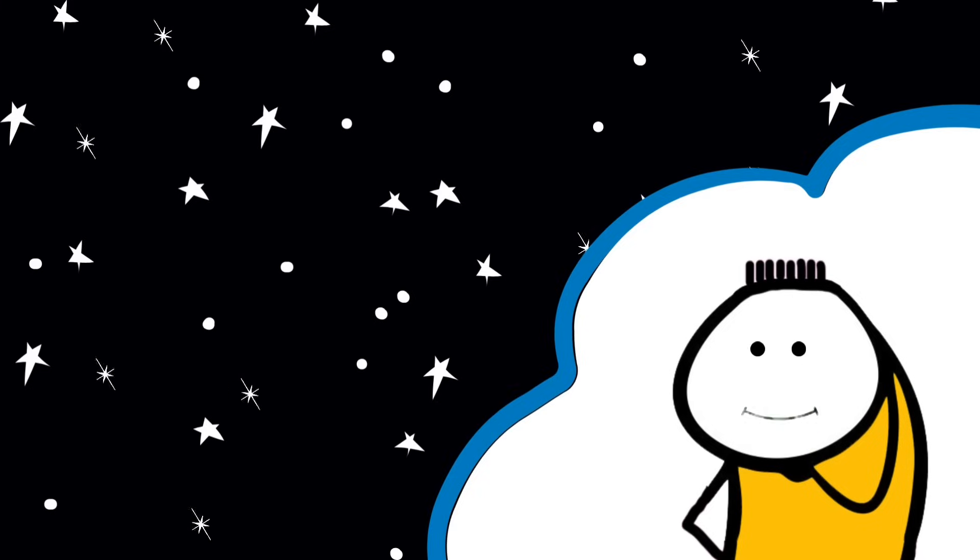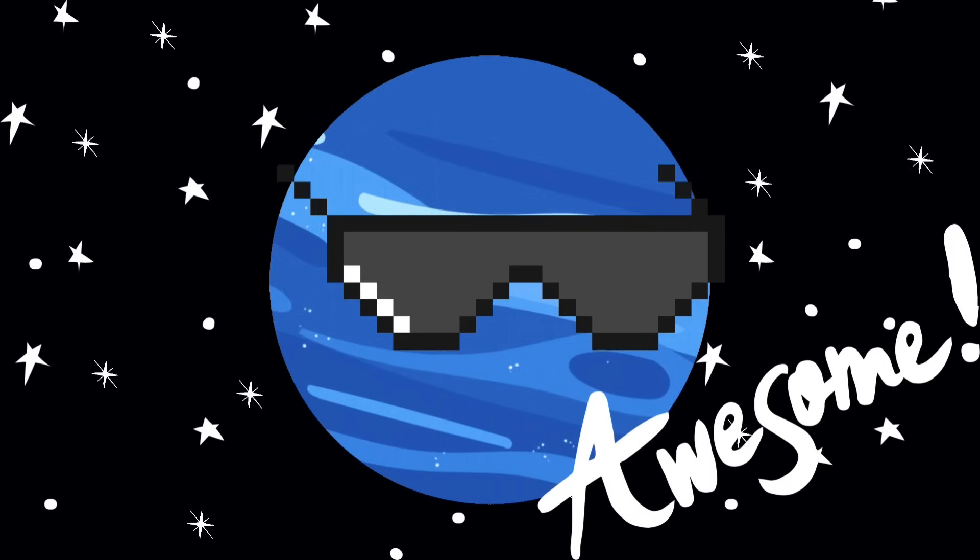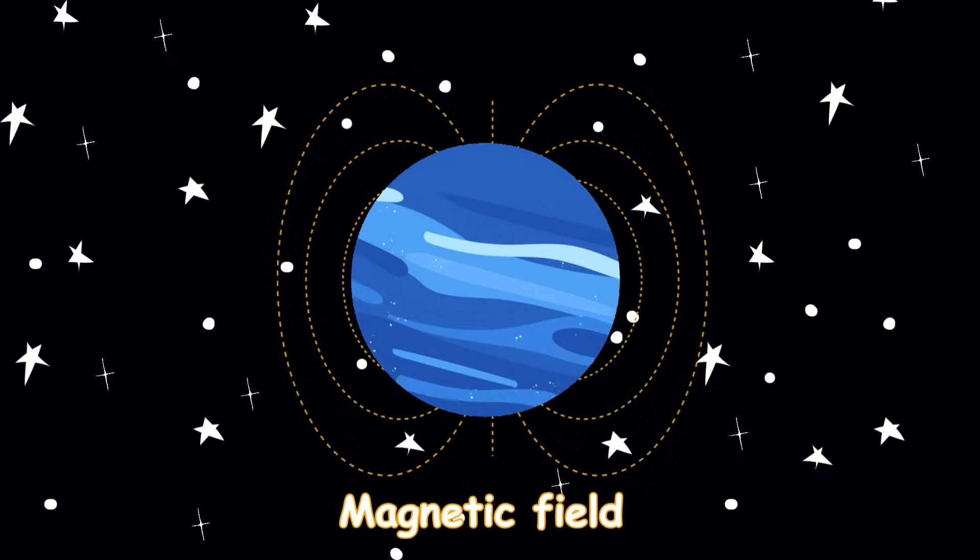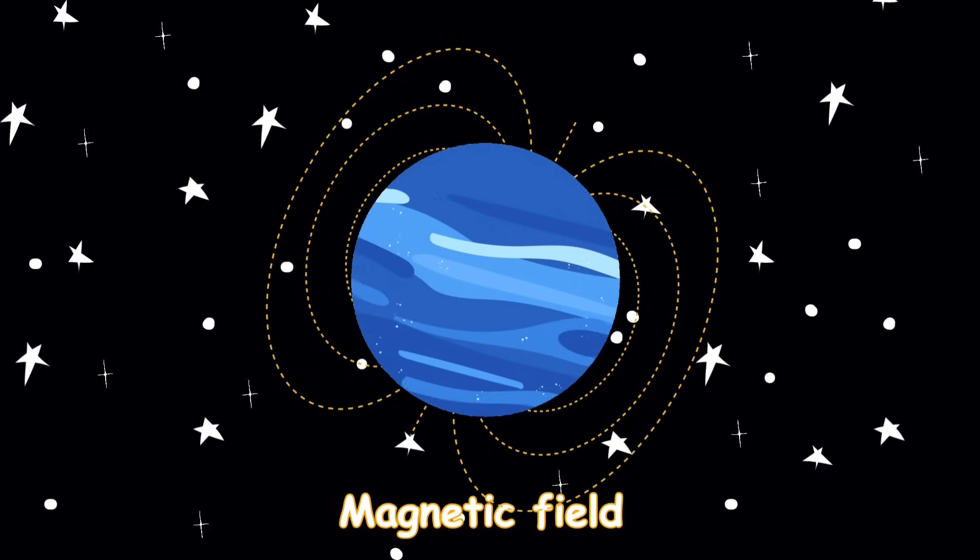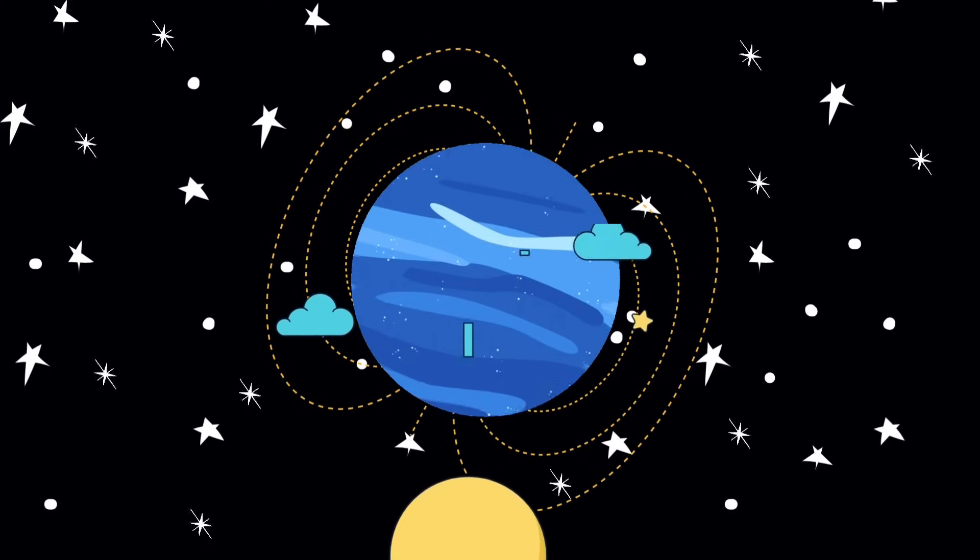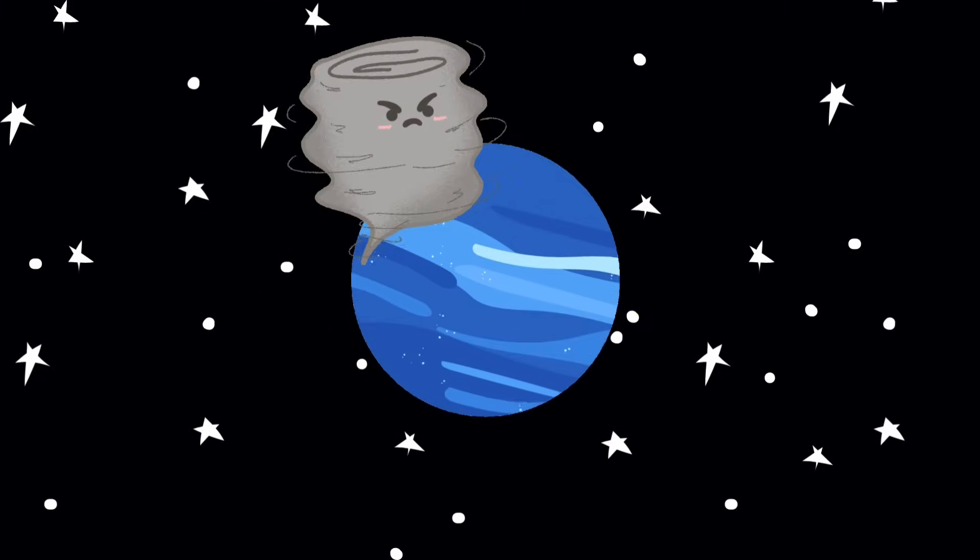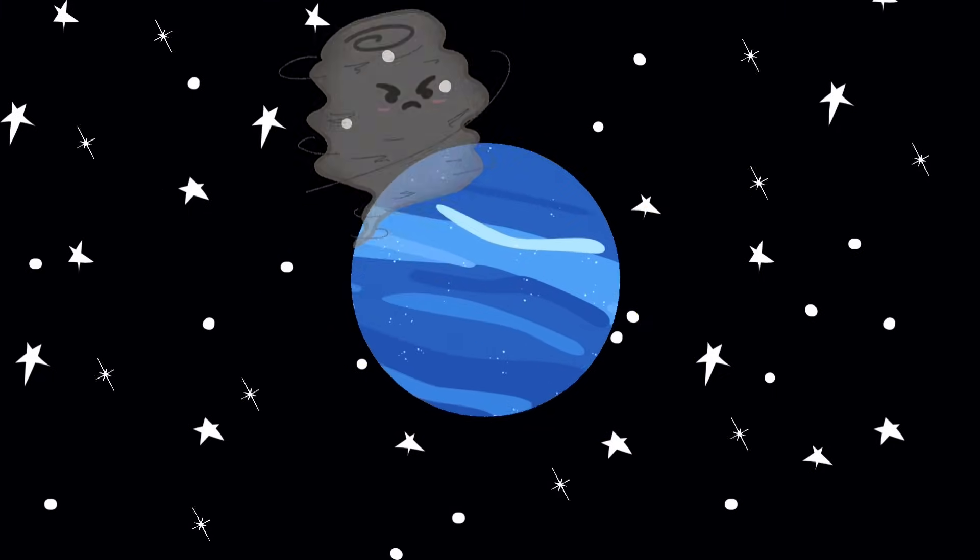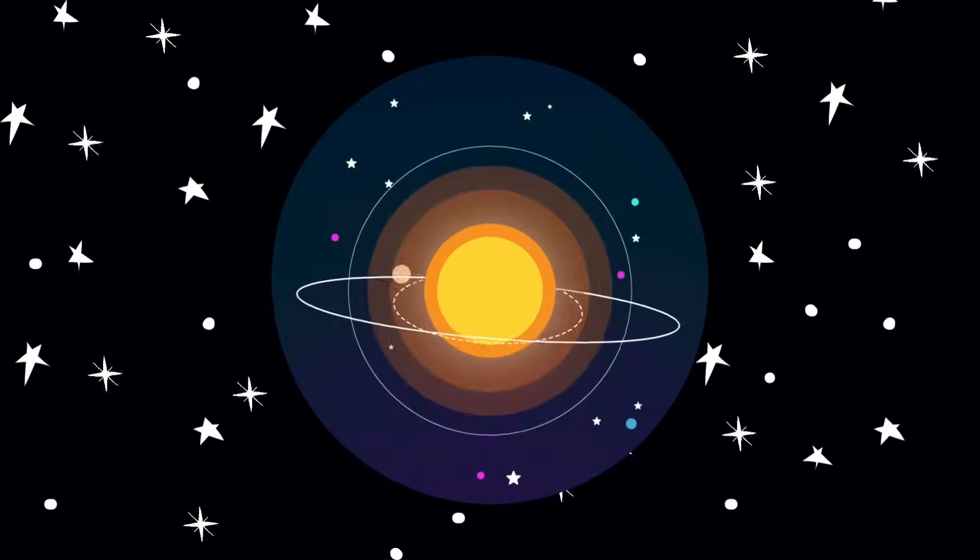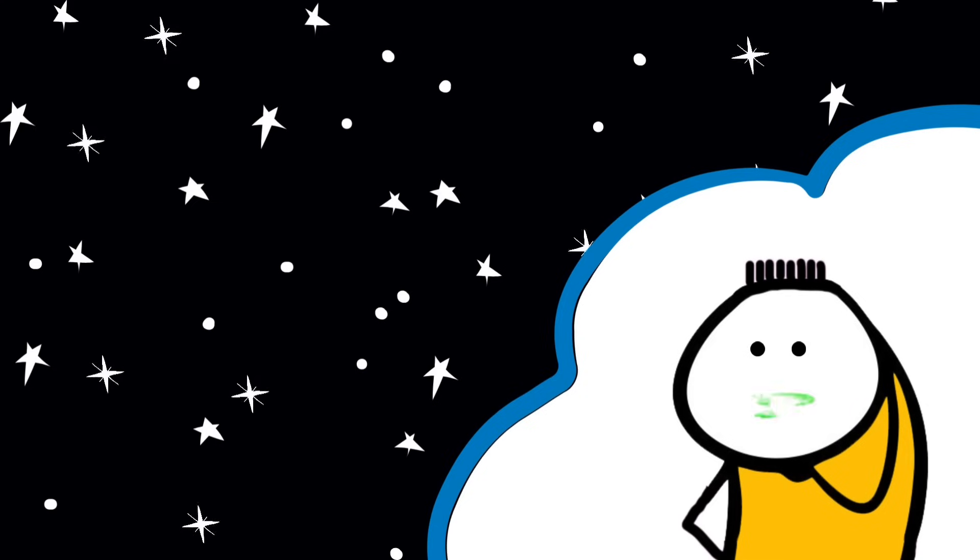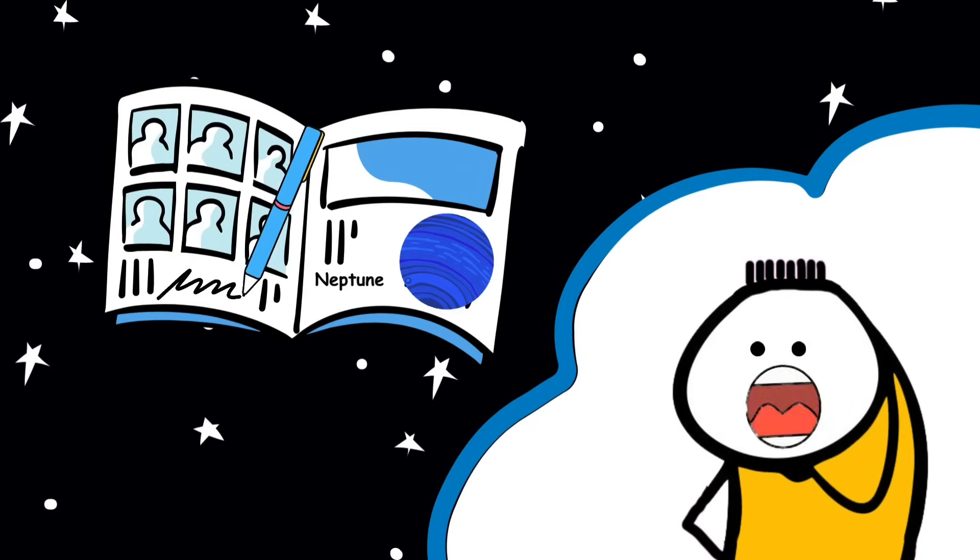Here's the twist, though. Despite all this, Neptune is kind of awesome. It's got a magnetic field tilted at a weird angle, a mysterious internal heat source, and gravity strong enough to mess with objects billions of miles away. Its storms could teach us about planetary weather. Its moons could help us understand orbital mechanics. And it's probably hiding secrets that could rewrite textbooks.